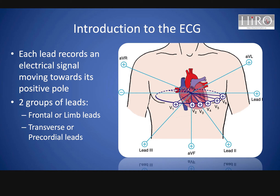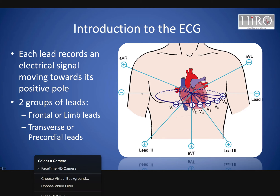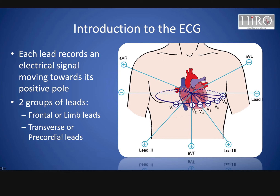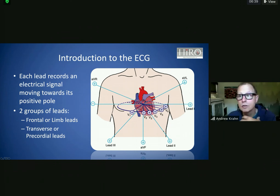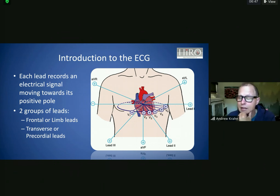An EKG is basically 12 different cameras looking at the electrical signal that happens with each heartbeat. These are divided into two kinds of leads. The first kind are the limb leads, where an electrode or sticky is placed on the right shoulder, left shoulder, and the leg, which creates a triangle. Those are among the 12 leads in an EKG. If this seems too slow or too fast, don't worry — we'll iterate over this and see it plenty of times.